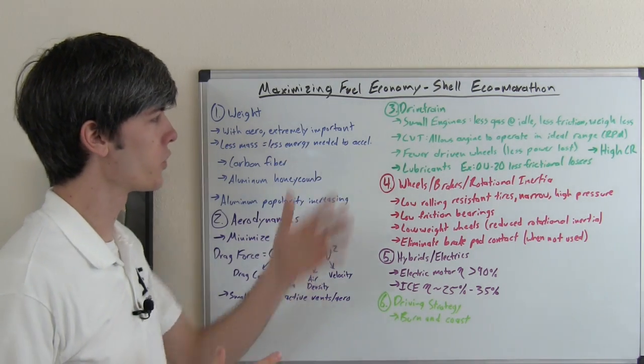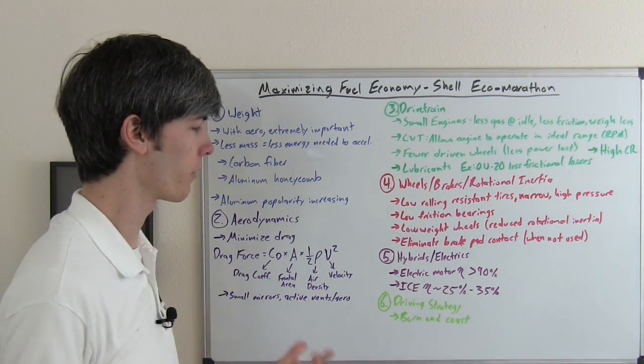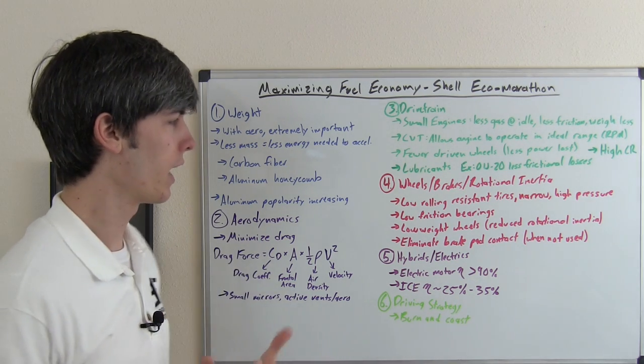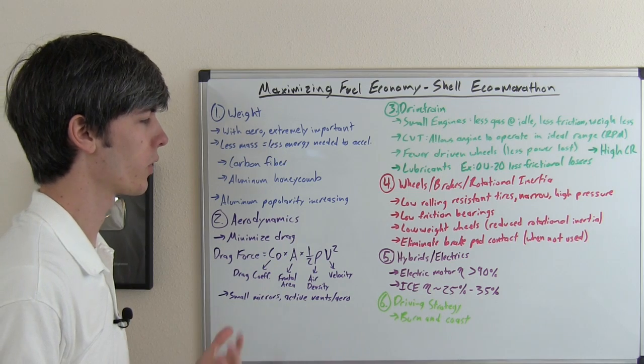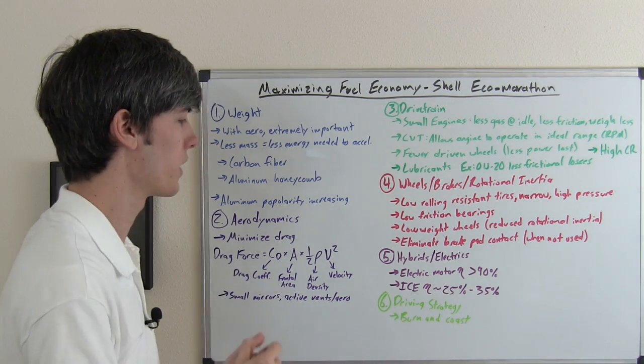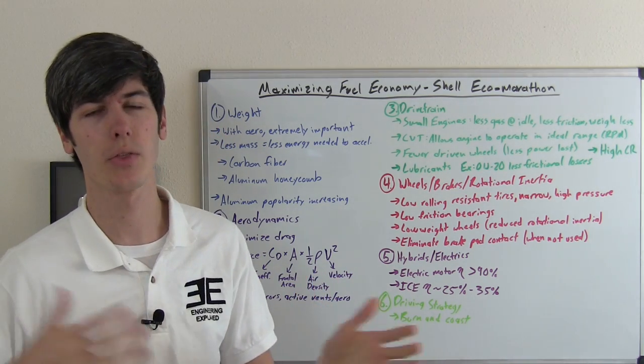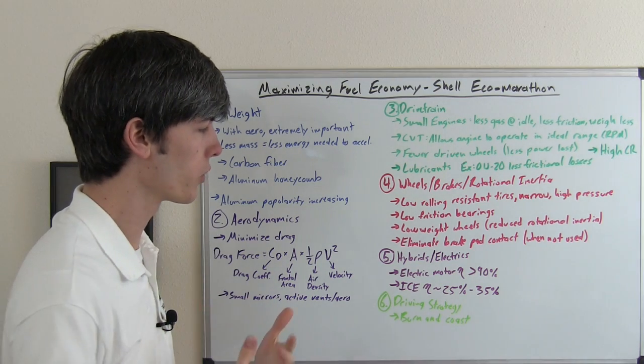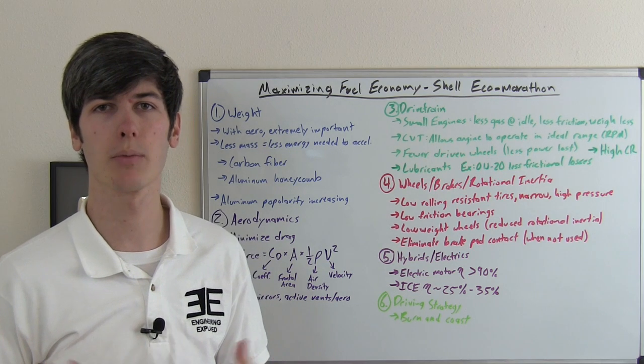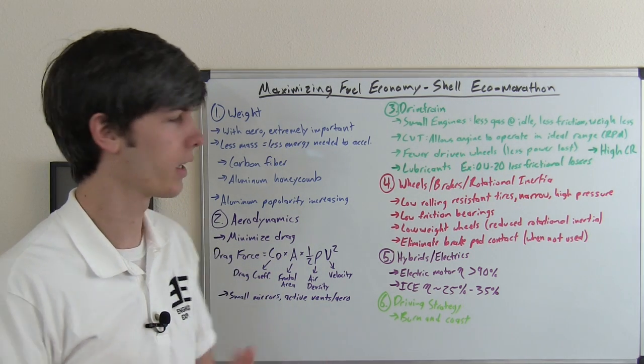Now getting back somewhat into the drivetrain topic, hybrids and electrics make great use of the efficiency of electric motors versus internal combustion engines in order to maximize fuel economy. So electric motors are actually about 90% or greater than 90% efficient often, and ICE engines are typically in the 25% to 35% range, so almost a third as efficient as the electric motor. So when you can make use of electric motors, it's a much more practical and efficient manner of accelerating something.